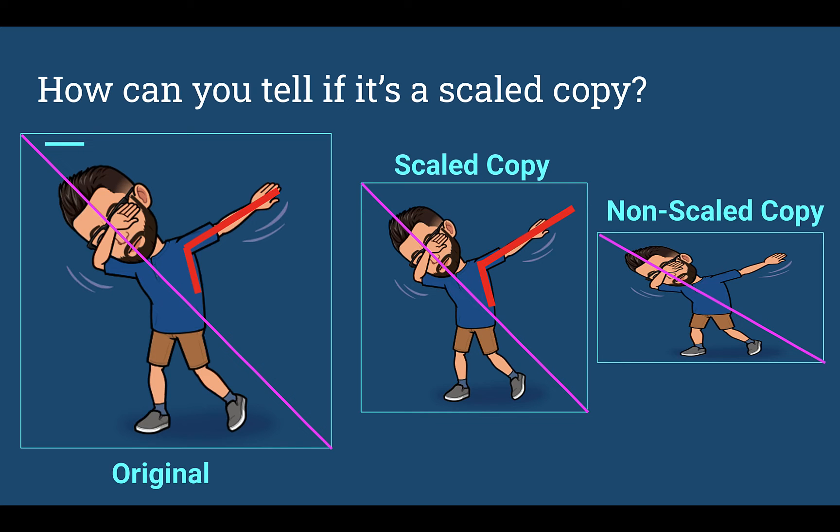If I look at the non-scale copy, and I were to copy and paste over what was already there, it doesn't go through the arm anymore. It's not following those same dimensions.